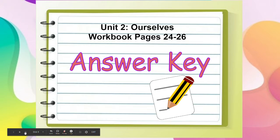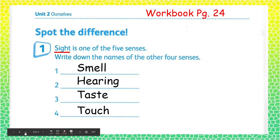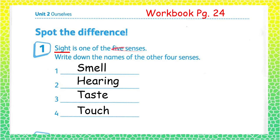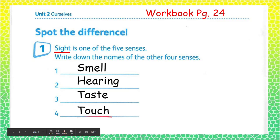Now let's see if your answers are all correct with this answer key. Spot the difference — sight is one of the five senses. Now you were asked to write down the names of the other four senses. And these are: smell, the sense of hearing, the sense of taste, and the sense of touch.